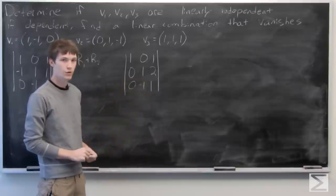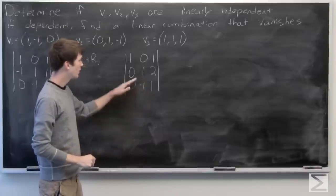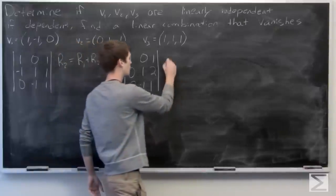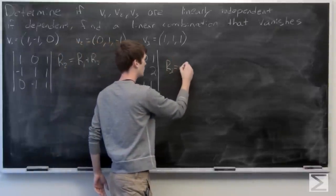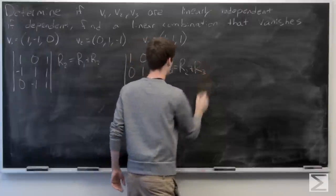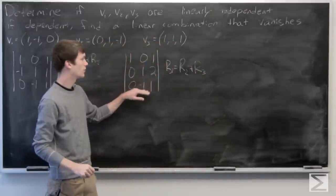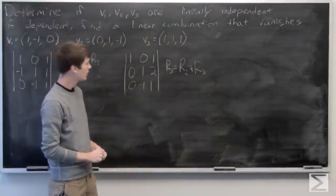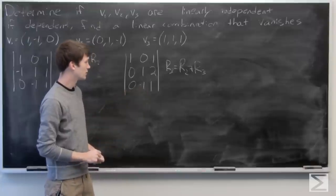And again, we know by the properties of the determinant that we can set row 3 equal to row 2 plus row 3, and our determinant remains unchanged.